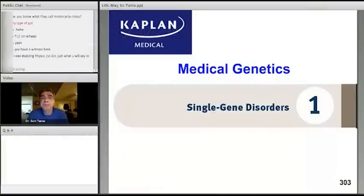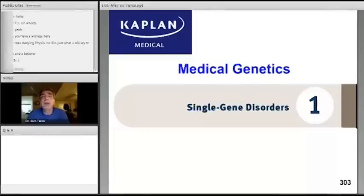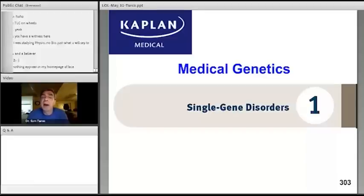Now, yesterday, we began Chapter 1, which deals with single gene disorders, and this is a very high-yield chapter because it covers all of the pedigrees. Yesterday, we talked about three of the five pedigrees: autosomal dominant, autosomal recessive, and we went through the biochemical explanation of why one disease is recessive and another is dominant from a biochemical point of view.